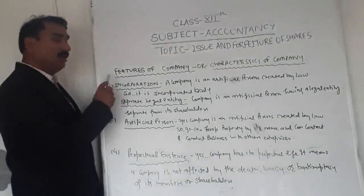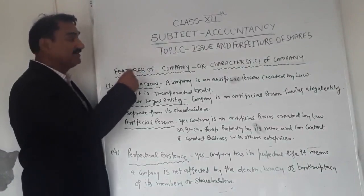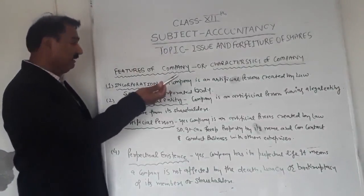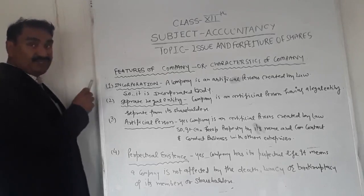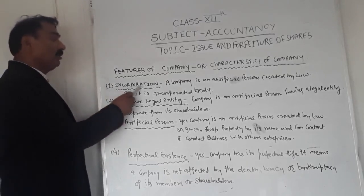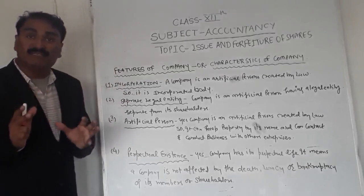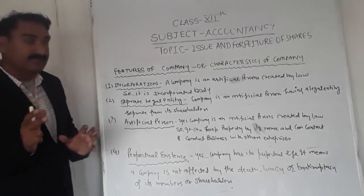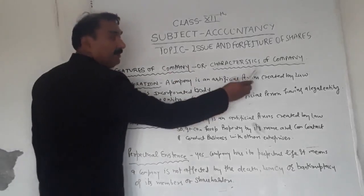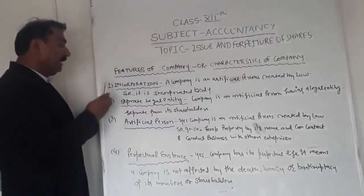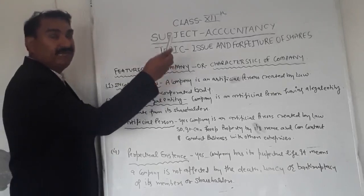Now we will start the features, or characteristics, of a company. The first feature is incorporation. Incorporation means the registration of a company. A company is an artificial person created by law and it is an incorporated body under any of the Companies Acts.